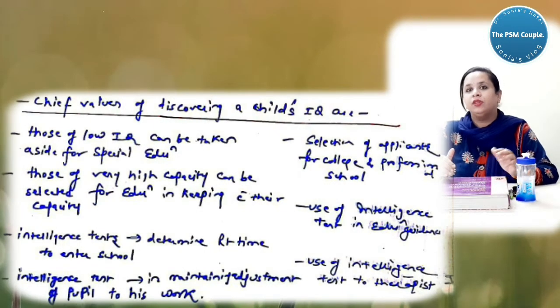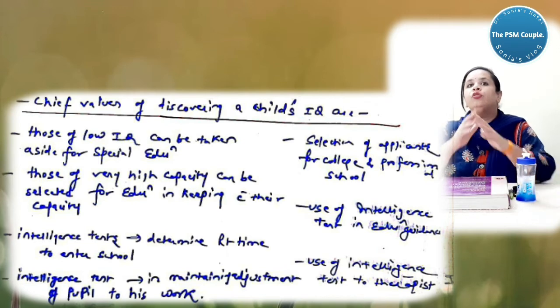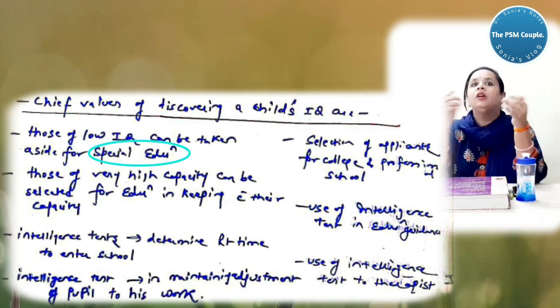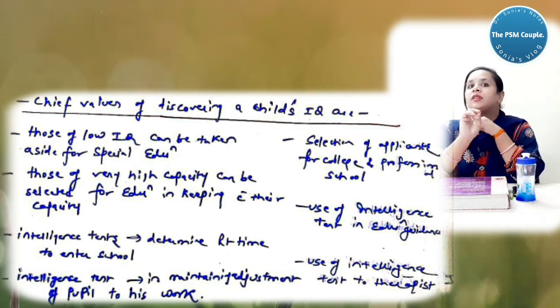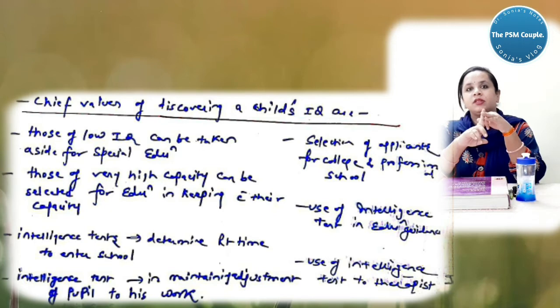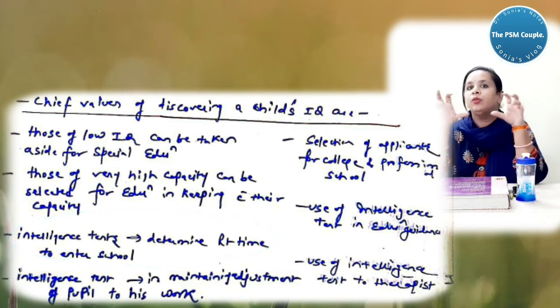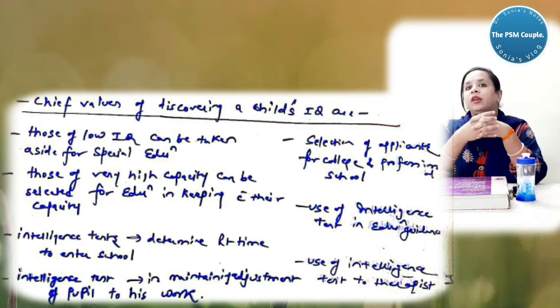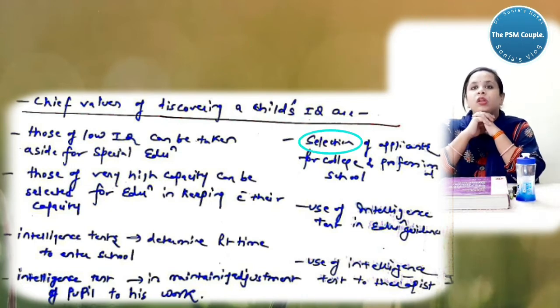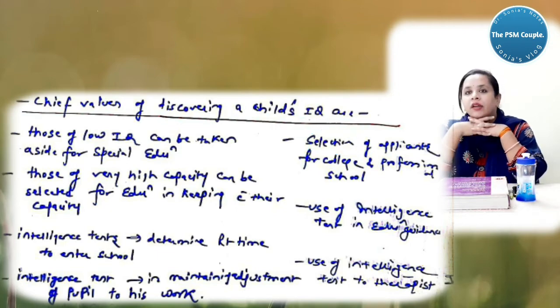Now what are the chief values of discovering a child's IQ? Those with the low IQ can be taken aside for special education. Those with higher capacity can be selected for education in keeping with their capacity. Intelligence tests determine right time to enter the school, help in maintaining adjustment of pupils to his work, selection of applicants for college and professional school, use of intelligence tests in the education guidelines and use of intelligence tests to the therapist.